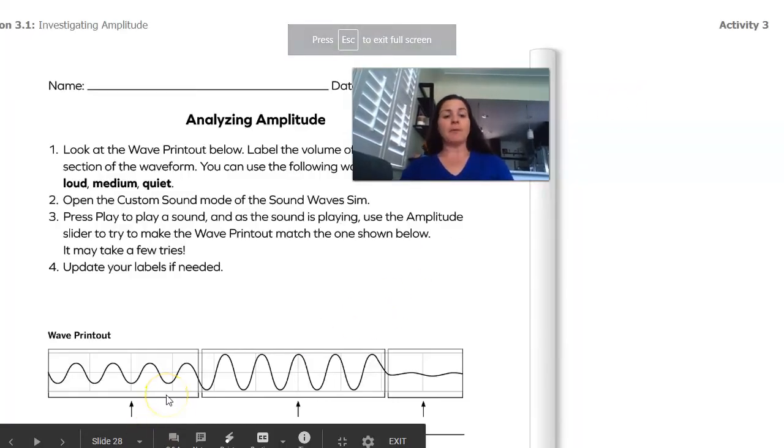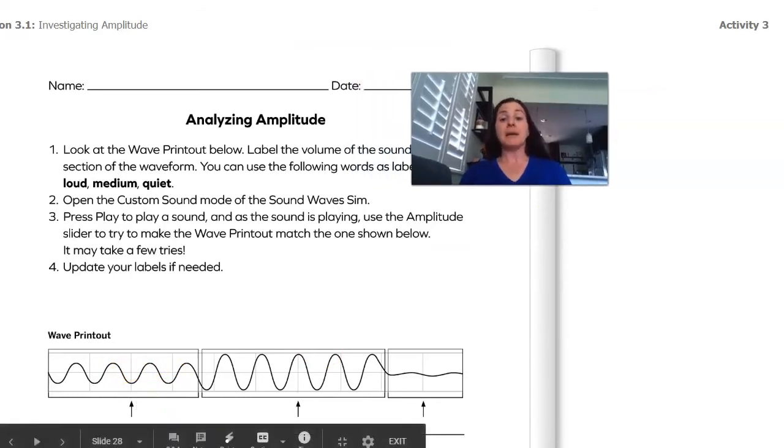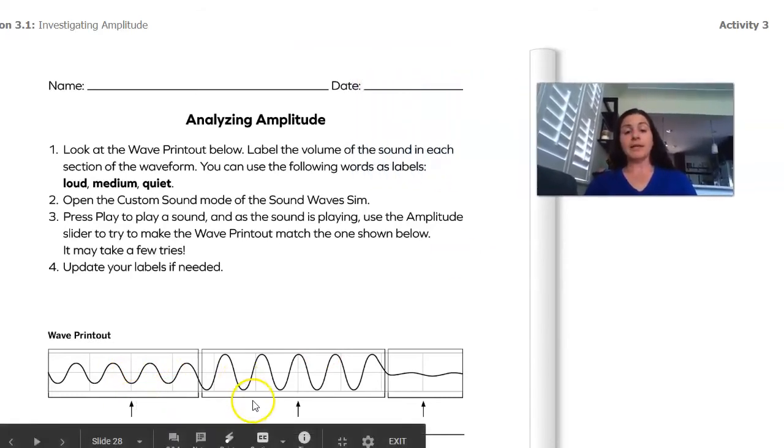So if I'm going to label these, I'm going to label this first one. That's a medium amplitude. Second one is a loud amplitude. And the last one is a quiet amplitude.